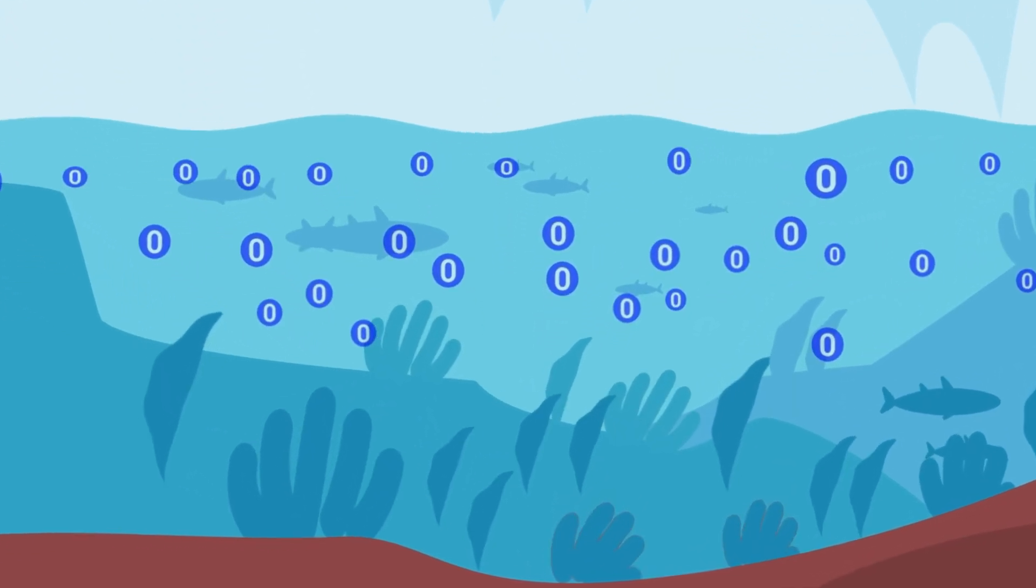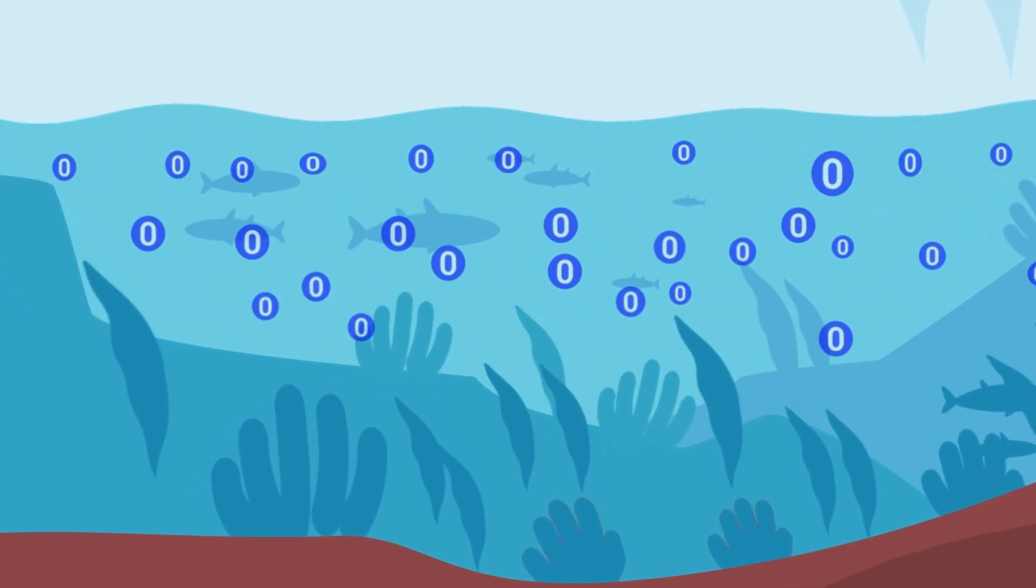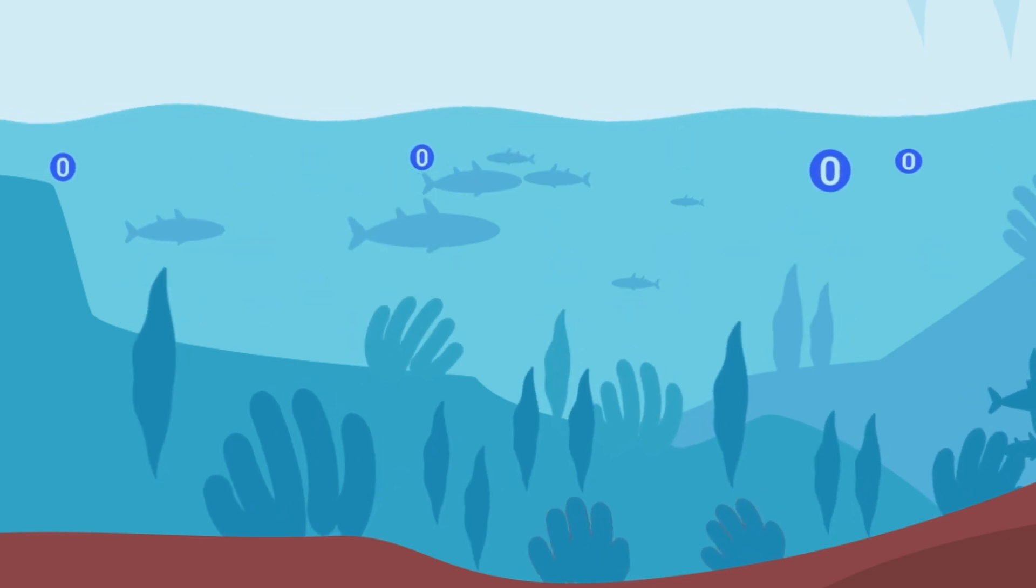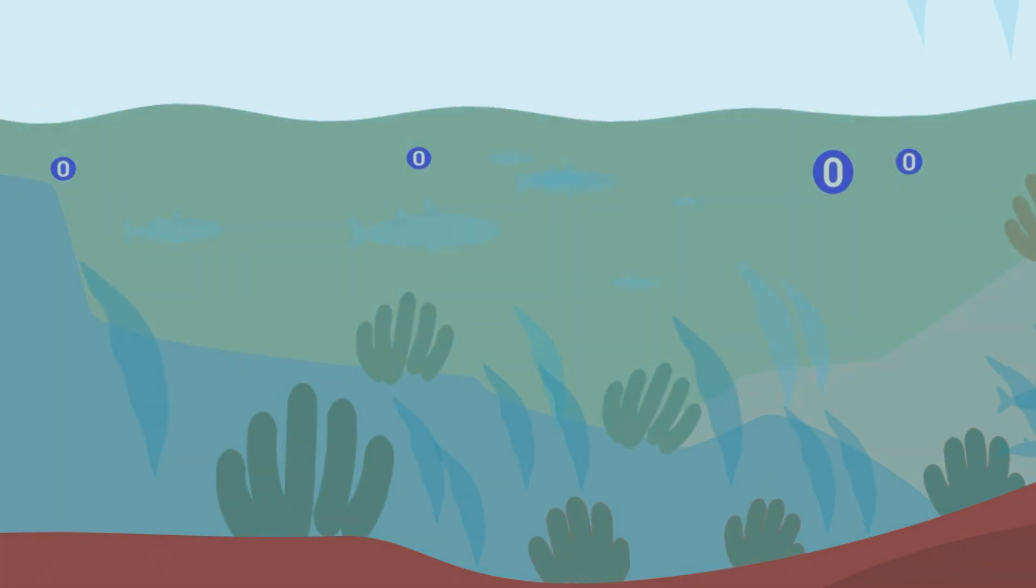Maintaining appropriate levels of dissolved oxygen is crucial for the balance of aquatic ecosystems. Low dissolved oxygen levels can lead to dead zones where aquatic life cannot survive, disrupting food chains and altering species distribution.